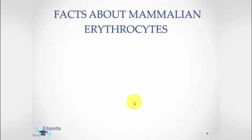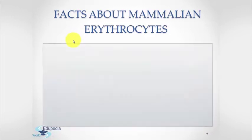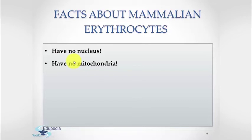There are certain facts about mammalian erythrocytes. First, they have no nucleus, which makes the RBCs biconcave, increasing the surface-to-volume ratio for more oxygen absorption. Second, they have no mitochondria. The erythrocytes thus cannot use the oxygen themselves, although oxygen absorbed by the RBCs is transported and delivered to the tissues without any loss.